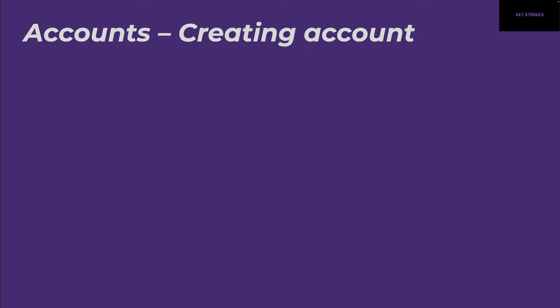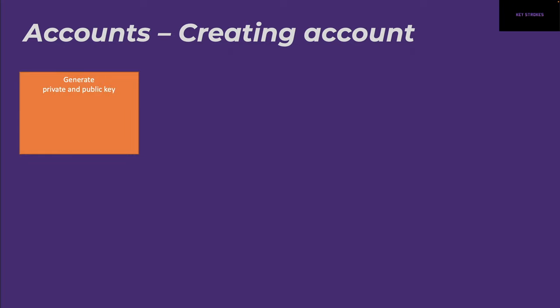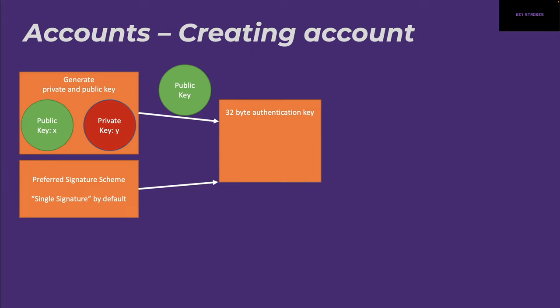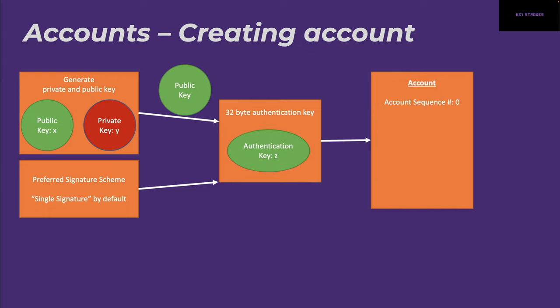Now let's talk about how an account is created and what the authentication key is about. The first step is to generate a private key and a public key, then we choose a preferred signature scheme — by default it uses single signature. Next, using the public key, it generates a 32-byte authentication key. As a final step, when the account is created we initialize the account sequence as zero, and we store the authentication key in the account. The authentication key itself becomes the account address.